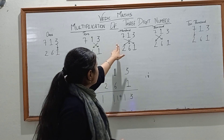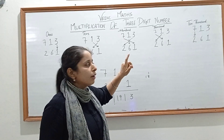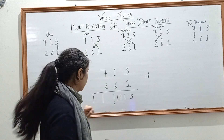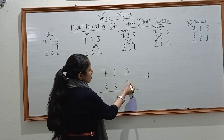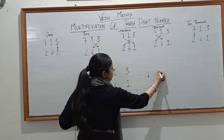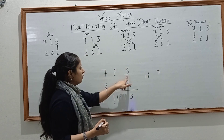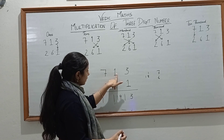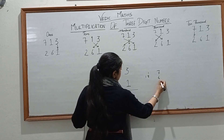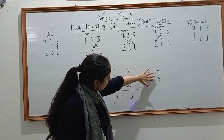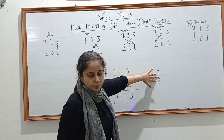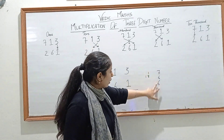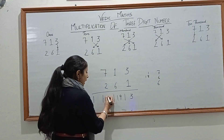For the digit on the 100th place, follow the crisscross multiplication method. 7 into 1 is 7, 3 into 2 is 6, and 6 into 1 is 6. Here 3 products are there. Add the 3 products: 7 plus 6 plus 6 gives you 19.